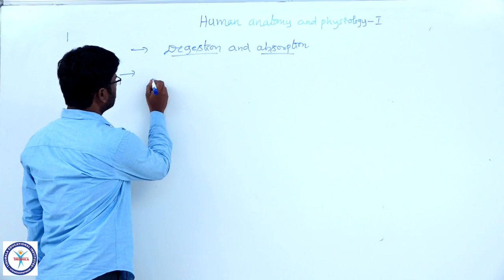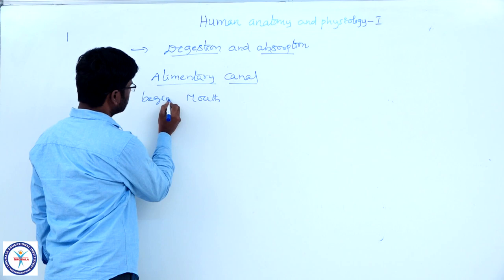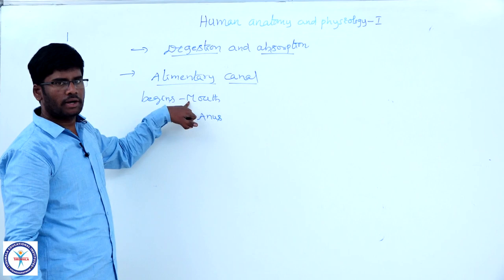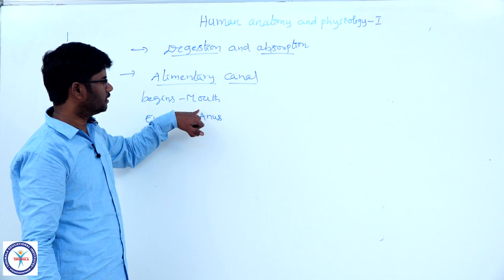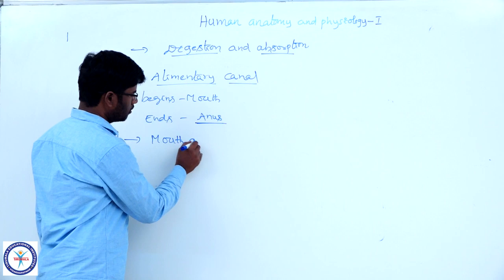The digestive system has an elementary canal and associated digestive glands. The elementary canal begins with the mouth and ends with the anus. Mouth leads into buccal cavity, buccal cavity leads into pharynx, pharynx leads into esophagus, esophagus leads into stomach, stomach into small intestine, small intestine into large intestine, large intestine leads into rectum, and finally rectum opens by way of the anus.